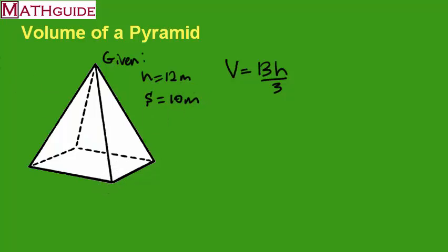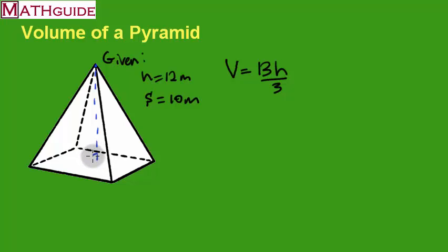If we're going to deal with this scenario, you should understand where these distances are in the diagram. The height is how tall the figure is — from the base to the top of the pyramid where all of the edges come together. If we draw a segment from that point so that it's perpendicular to the base, that would be our height. So this segment is the height, which is 12 meters.